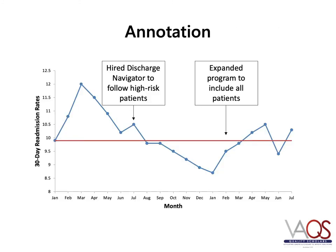Run charts will only tell you if change has happened — they will not tell you what caused the change. Annotation is one way to help readers understand the attributable causes for a change in performance. As you can see in this example, there was an improvement in the 30-day readmission rate following the introduction of a dedicated discharge navigator for high-risk patients, and these improvements went away when the program was expanded to all patients and the workload of the discharge navigator increased.